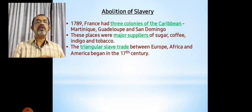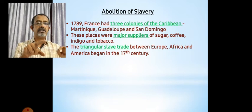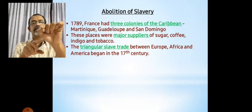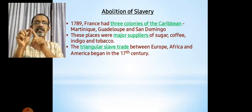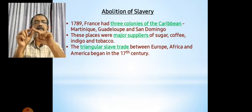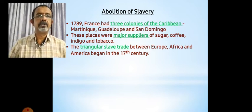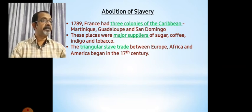So this was a triangular slave trade: from Europe to Africa to America. Then the produce — sugar, coffee, indigo, and tobacco — returned back to Europe. So it was a triangle: you start from Europe, go to Africa, then the Caribbeans, and back to Europe. This triangular slave trade happened during the 17th and 18th centuries, beginning in the 17th century and continuing till the 18th century.